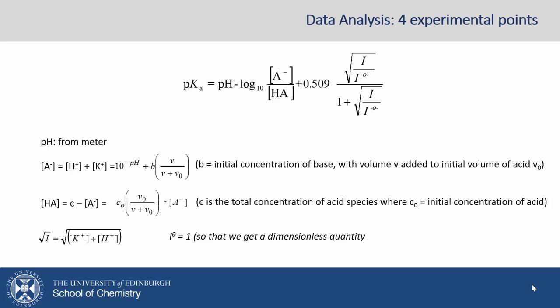And finally, we have the square root of I value. Well, the square root of I will be equal to the sum of the square root of potassium ions plus hydrogen ions. Again, just to remind us that the I0 value equals 1 here, just so that we get a dimensionless quantity. We now know all of the components of this expression, so we can calculate pKa.